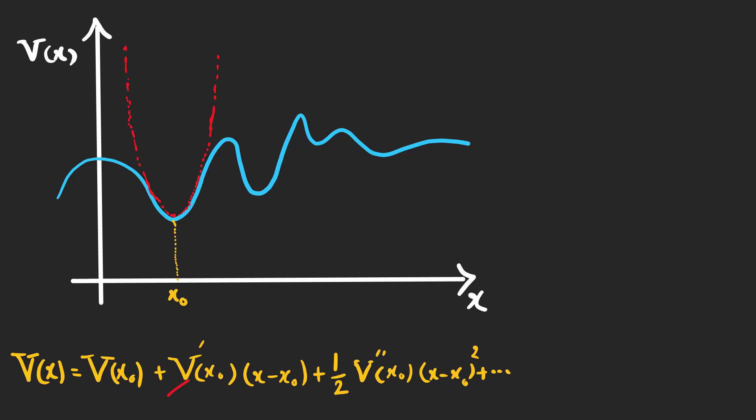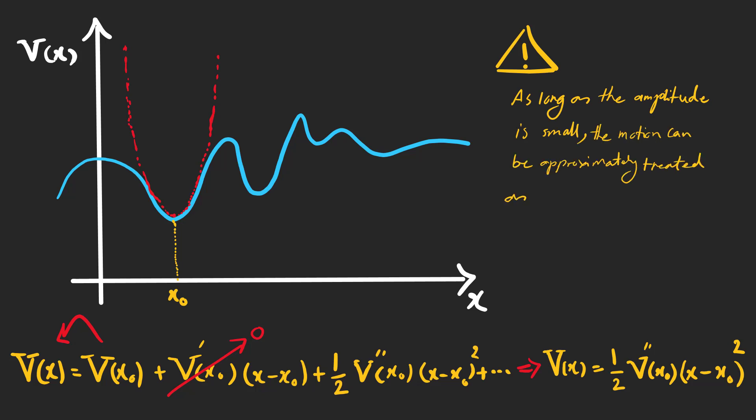Suppose that we have an arbitrary potential. Any potential is approximately parabolic in the neighborhood of a local minimum. The Taylor series around this local minimum gives this expression. As long as the amplitude is small, the motion can be approximately treated as simple harmonic.